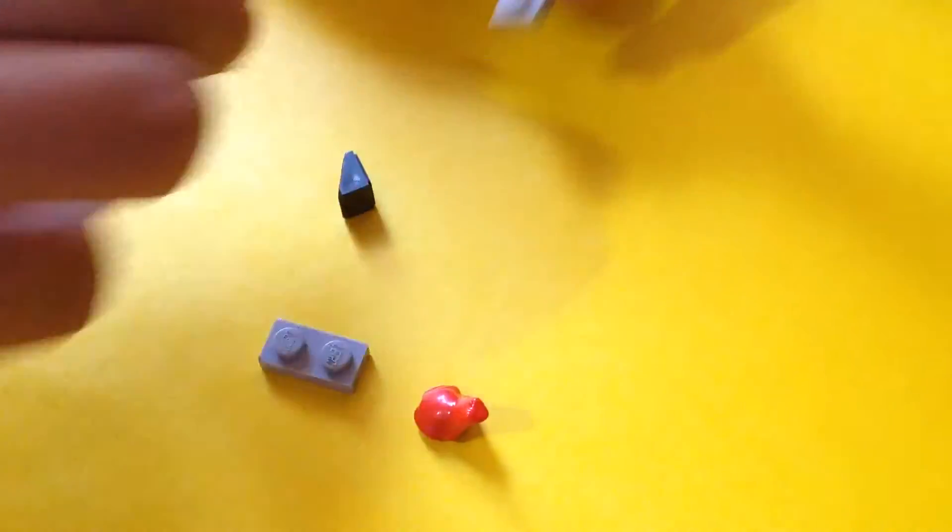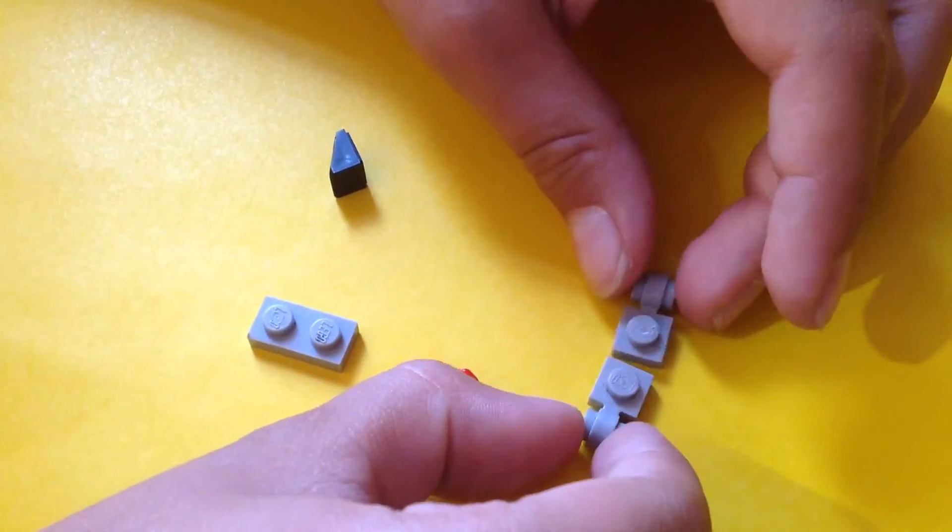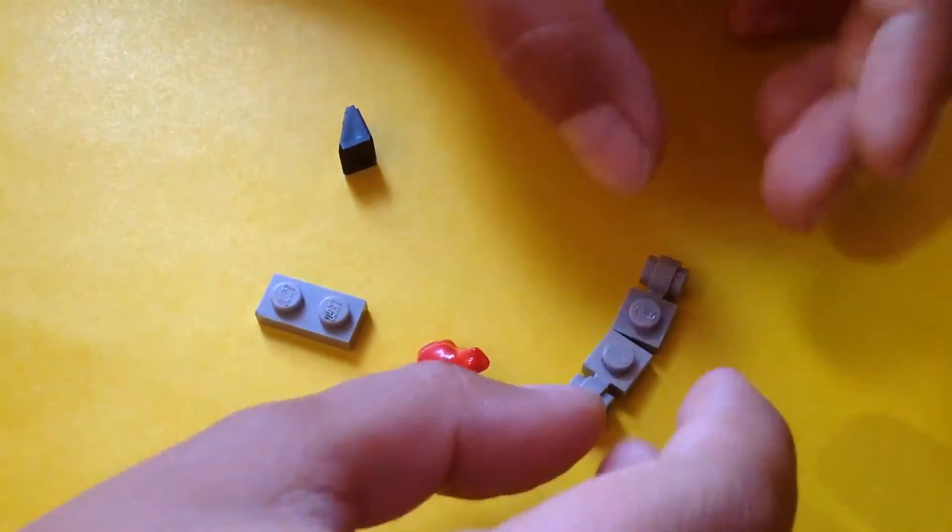First, you get your two wheels. This time I made them gray because I wanted to. And you put them together, just like on the race car.